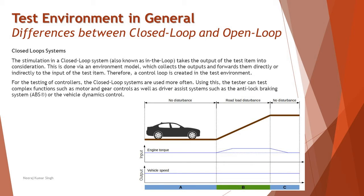Now looking at the closed loop system: the closed loop simulation — also known as in-the-loop — takes the output into consideration. Whatever the output is, the input is adjusted accordingly. The output of the test item is taken into consideration for deciding what should happen next in order to meet the expected behavior. This is done via the environment model itself, which collects the outputs and forwards them directly or indirectly to the input of the test item. It's a completely closed loop where feedback is collected and used to decide what input is required to maintain a particular speed, creating a control loop in the test environment.